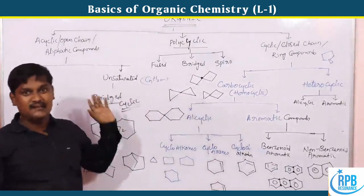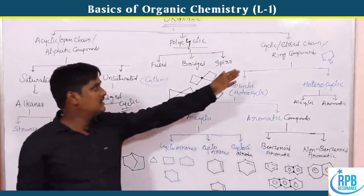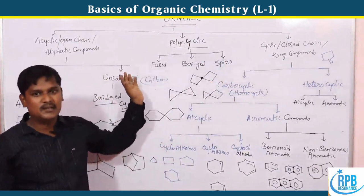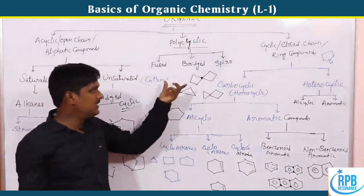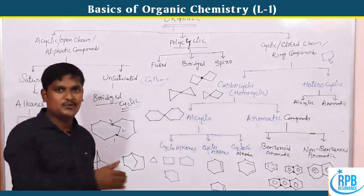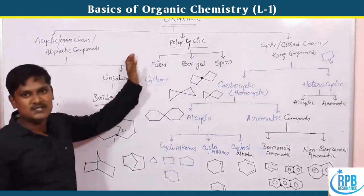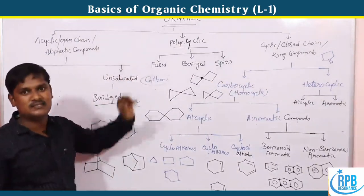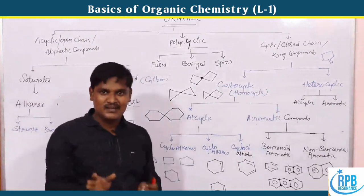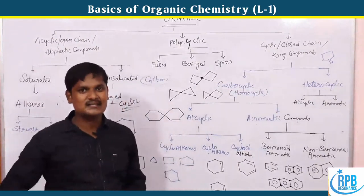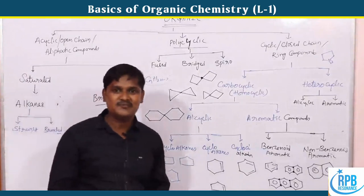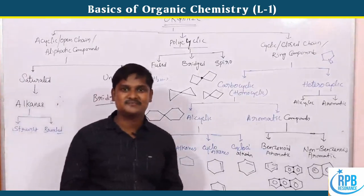So in summary: alicyclic, cyclic, and polycyclic compounds. Polycyclic includes fused, bridged, and spiro types. The next class will focus on IUPAC nomenclature in detail. Thank you so much for watching.